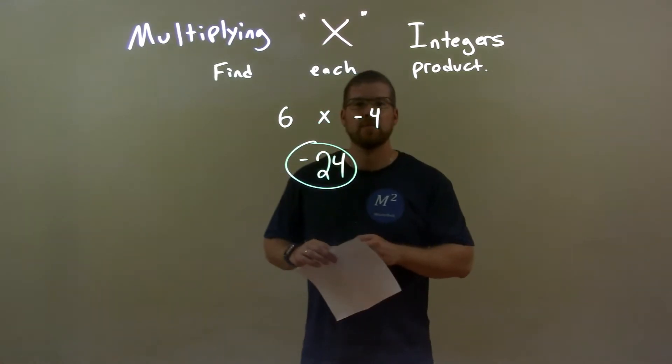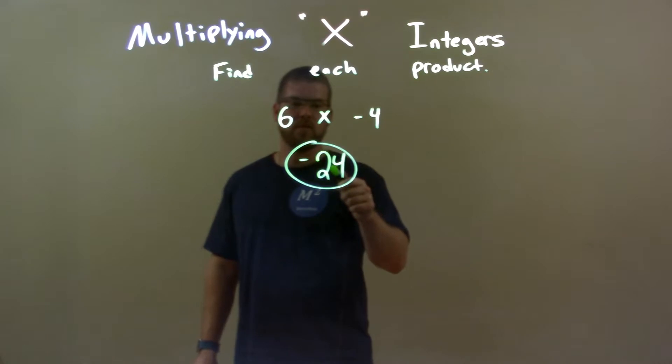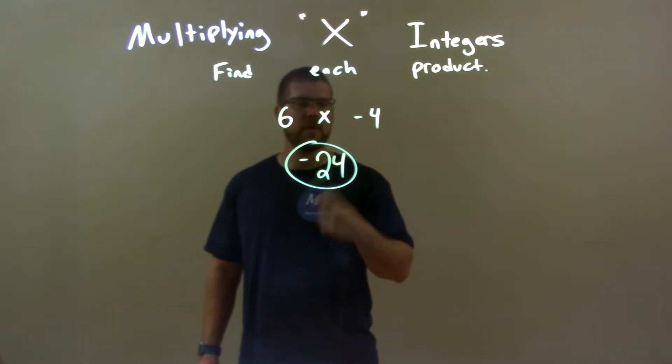Quick recap: we're given 6 times negative 4. We know 6 times positive 4 is 24, and then a positive times a negative is a negative. So the final answer again is negative 24.